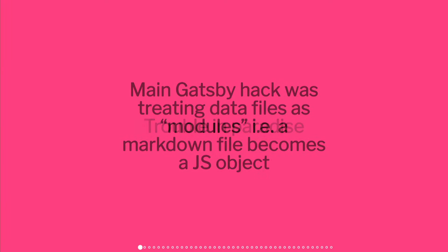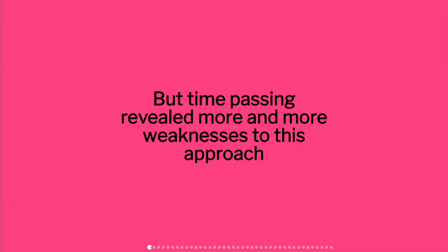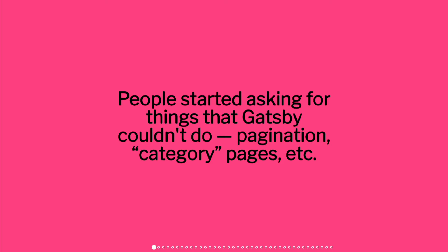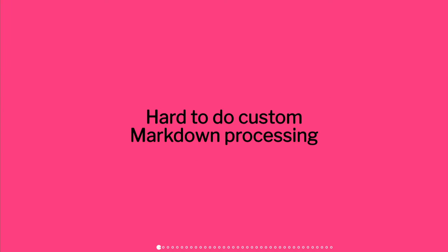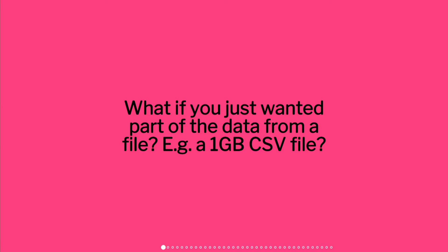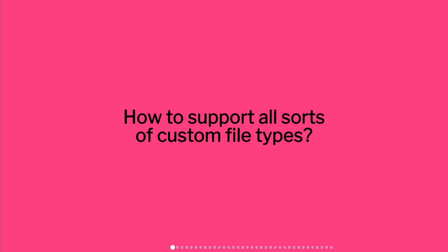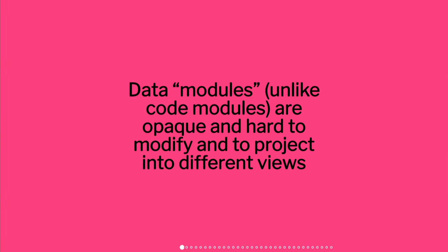But there's trouble. I was treating data files like Markdown as modules — like Webpack modules — so a Markdown file would become a JS object. But I was getting more and more feature requests for things that Gatsby couldn't do: stuff like pagination, category pages, custom processing in Markdown, and what if you just wanted one slice of data from a big file? Because Webpack would just pull in the whole file. Also, what if you wanted to take data from different sources and put it on lots of pages? Supporting custom file types, pulling in data from external APIs, databases — all these things that the treating-data-as-modules paradigm didn't really support.